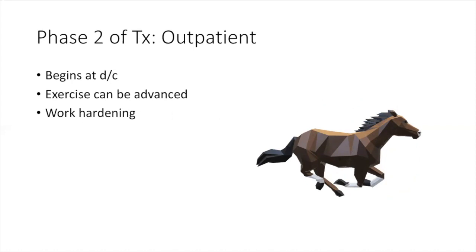The patient gets discharged from the hospital and goes to outpatient cardiac rehabilitation. This is where the discharge begins. Exercise can be advanced while the patient is closely monitored on an outpatient basis. This is where we could have work hardening — the patient is at home but goes to an outpatient facility to get treated. Think of a horse getting back on its feet, getting ready for work hardening.